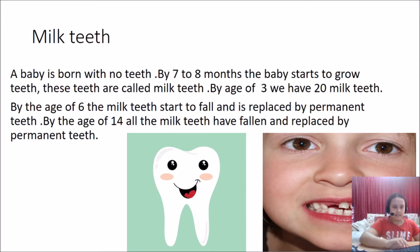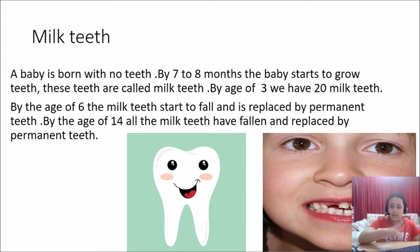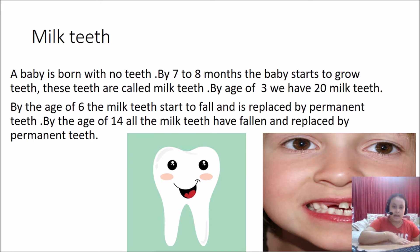Let's start with milk teeth. A baby is born with no teeth at all. By seven to eight months, the baby starts to grow teeth — these are called milk teeth. By the age of three, we have 20 milk teeth in total. By the age of six, the milk teeth start to fall and are replaced by permanent teeth. By the age of 14, all the milk teeth have fallen and been replaced by permanent teeth.